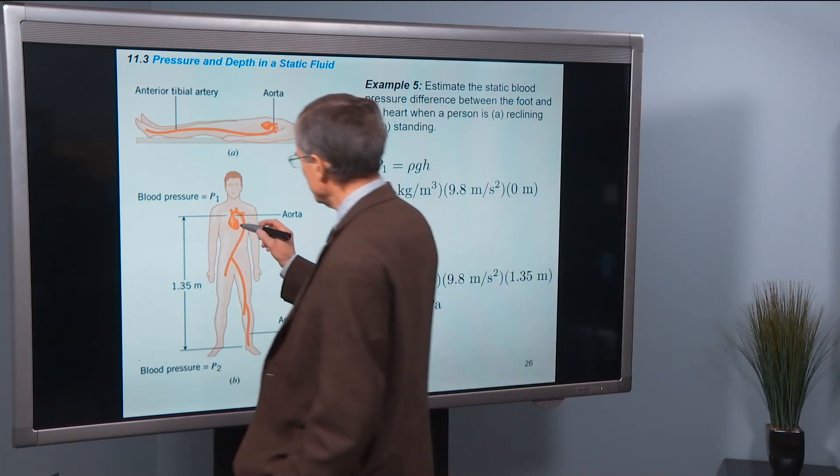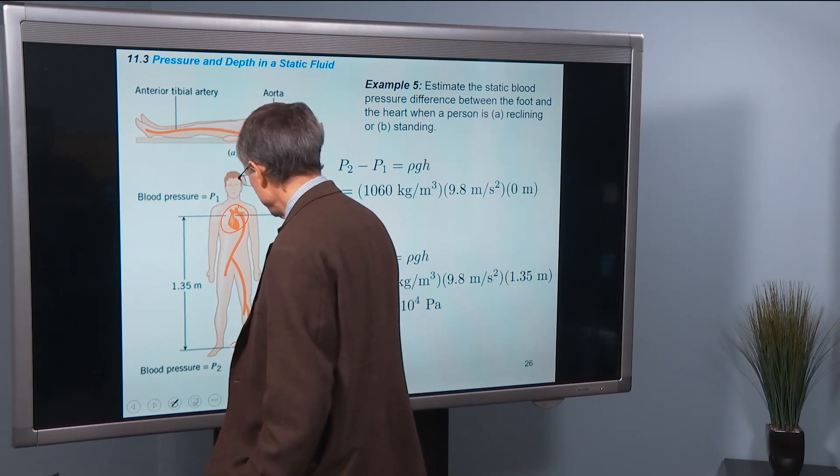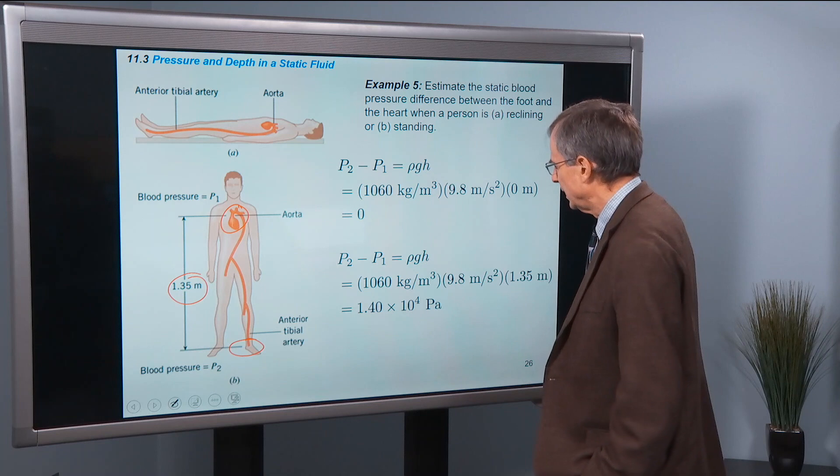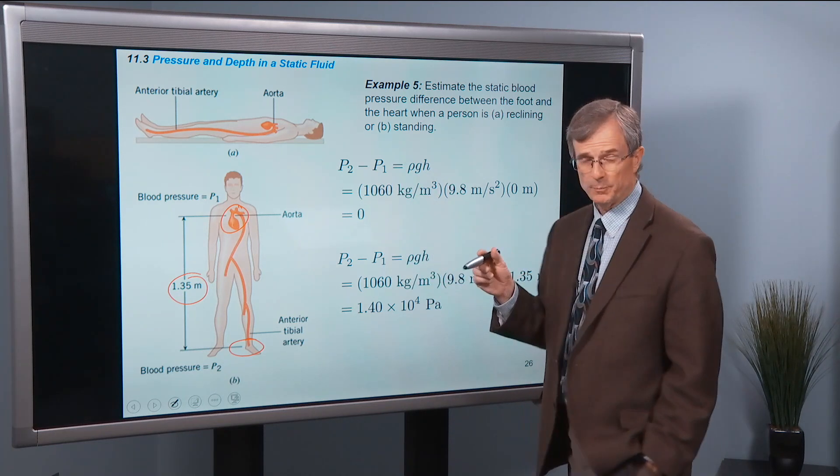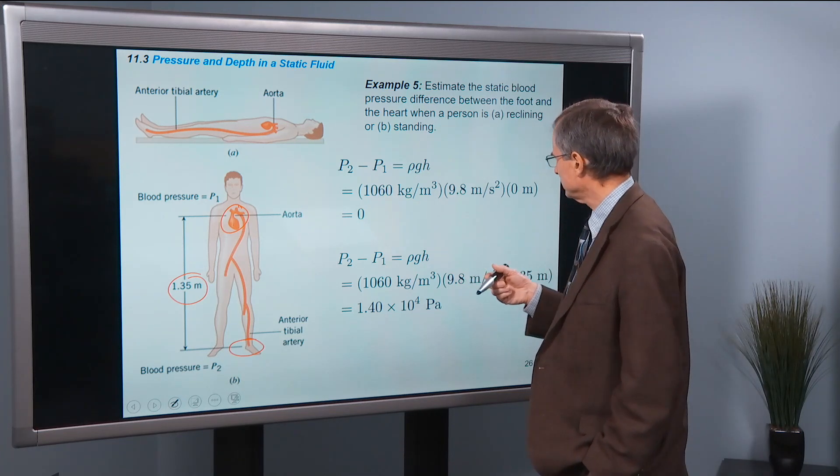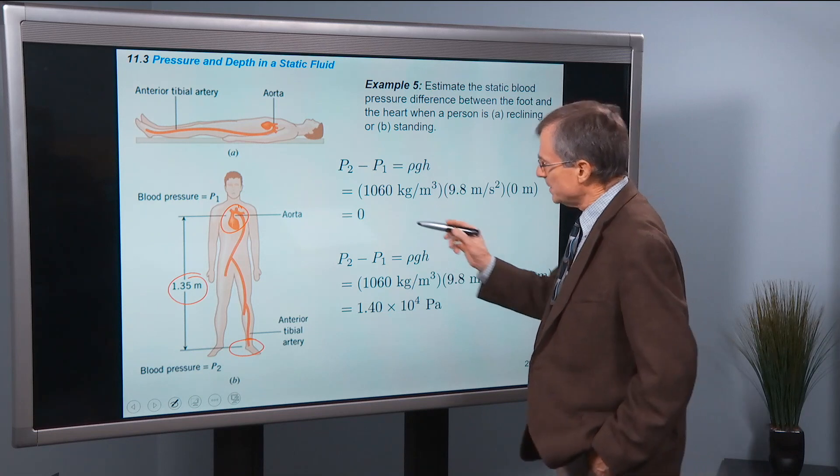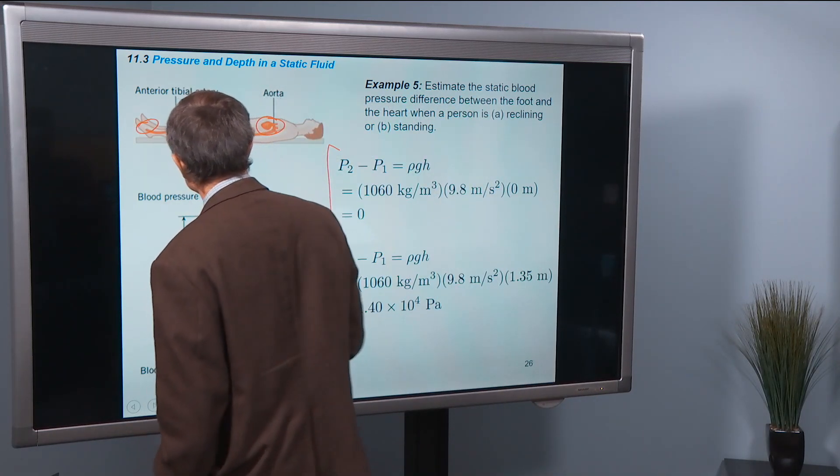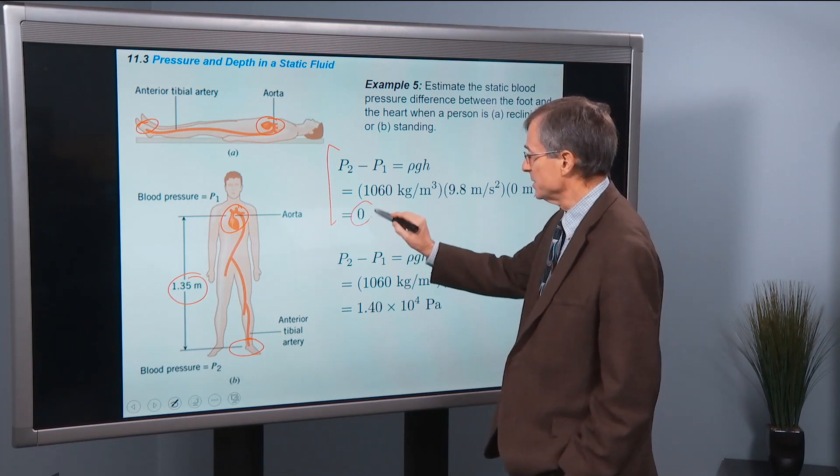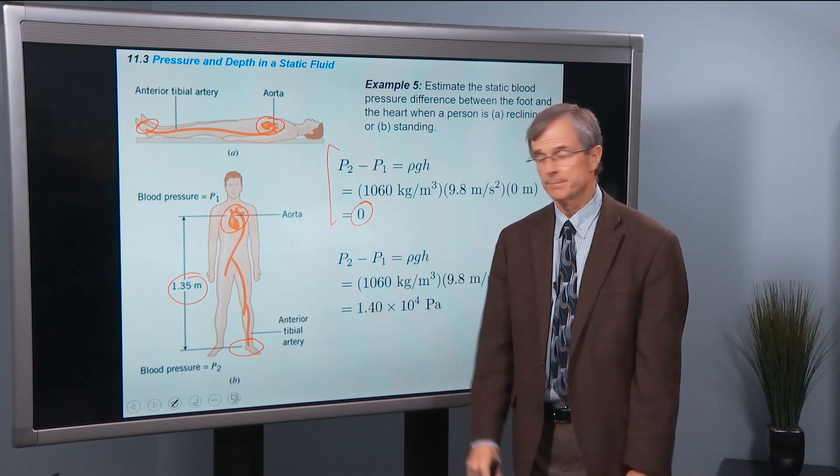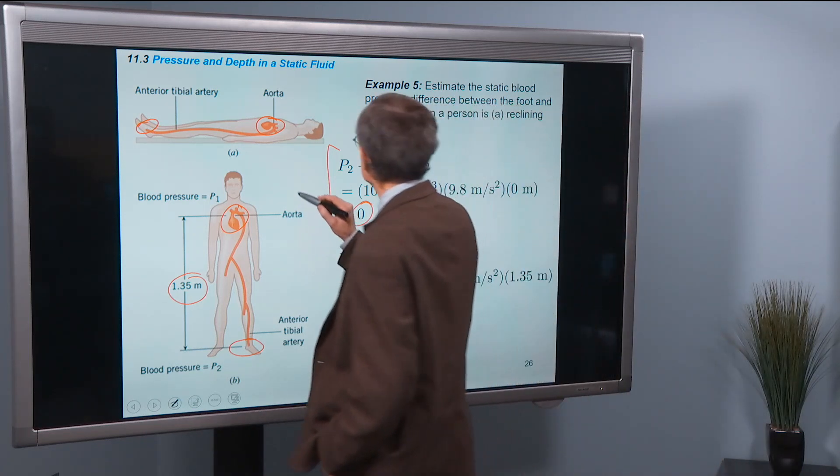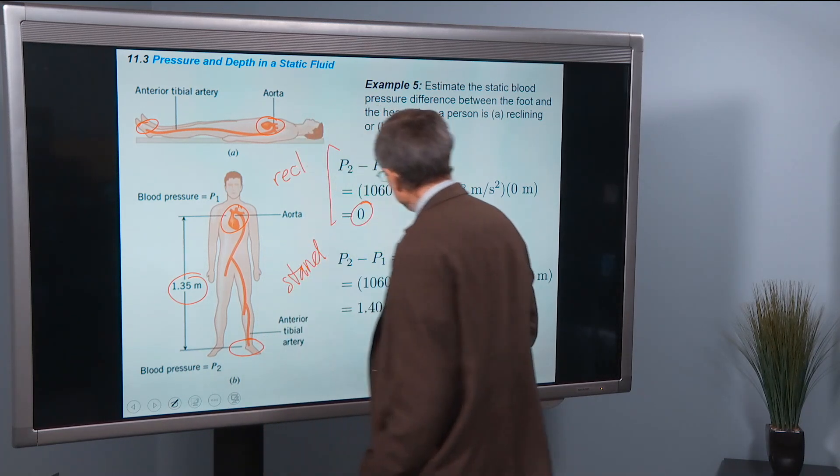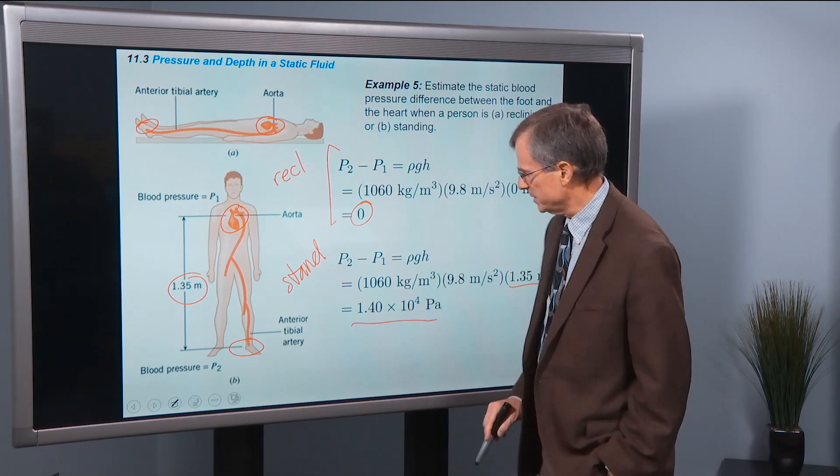So blood pressure, pressure P1 is at the heart and then P2 is down at the foot and there's a 1.35-meter difference in height between the two. P2 equals P1 plus rho gh. So I've subtracted P1 from both sides. And this is the calculation for resting situation. So the height here of the heart is the same as the height of the feet and the difference in pressure is zero, so they're both the same height above the ground. Whereas while standing, so this is resting, reclining, and this is standing. Then we do have a difference in height of 1.35 meters, and that's the difference in pressure.